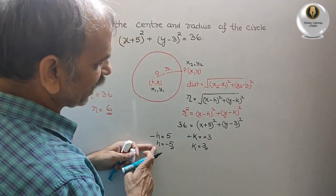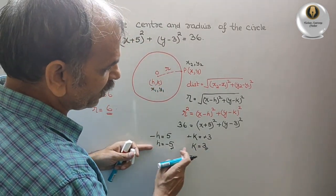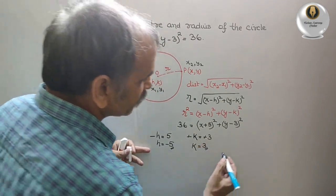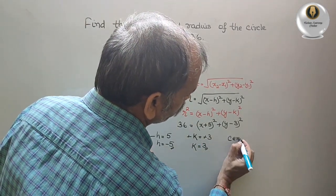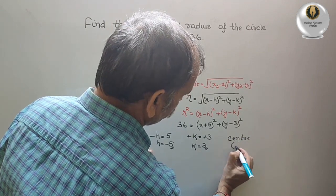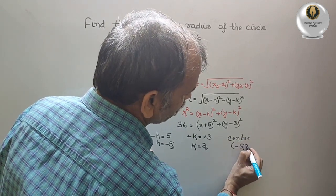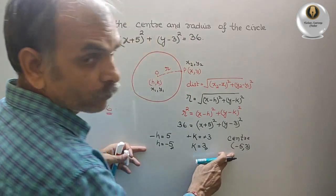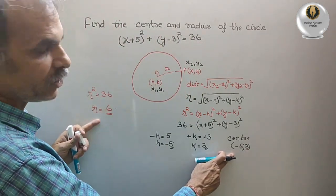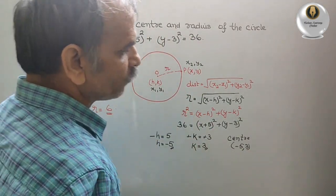So now the coordinate of the center is (-5, 3). Center coordinate is (-5, 3) and the radius is 6. So like this we have to find it out.